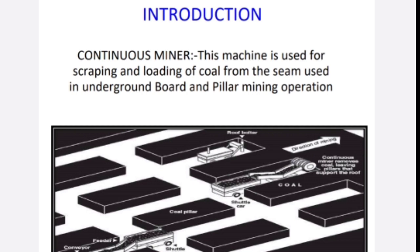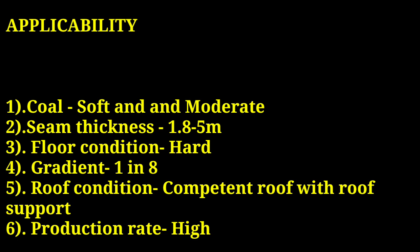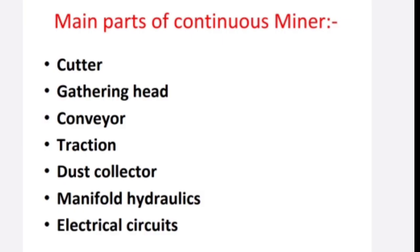Regarding the applicability of a continuous miner: coal should be soft to moderate; seam thickness should be at least 1.85 meters; floor condition should be hard; gradient should be within one unit; roof condition should be competent with roof and floor support; and production rate should be high.